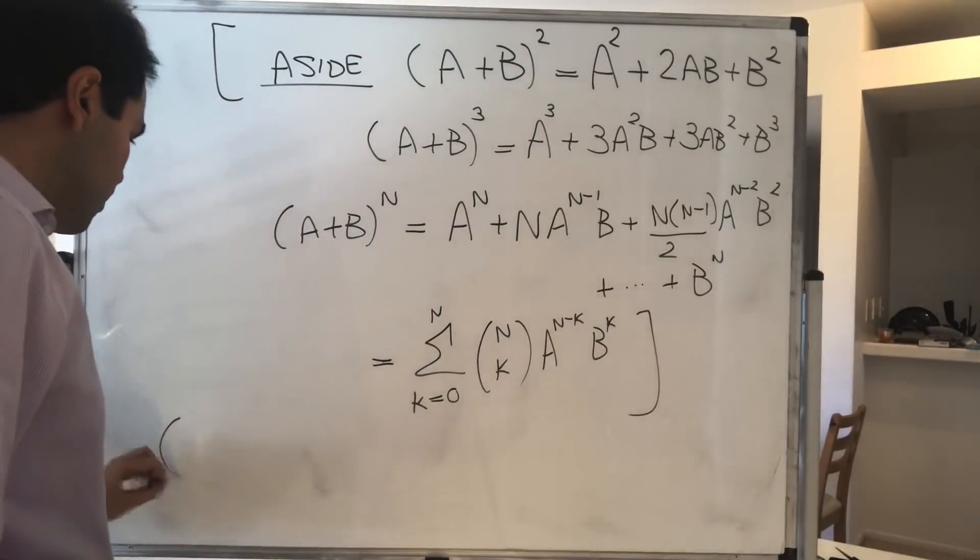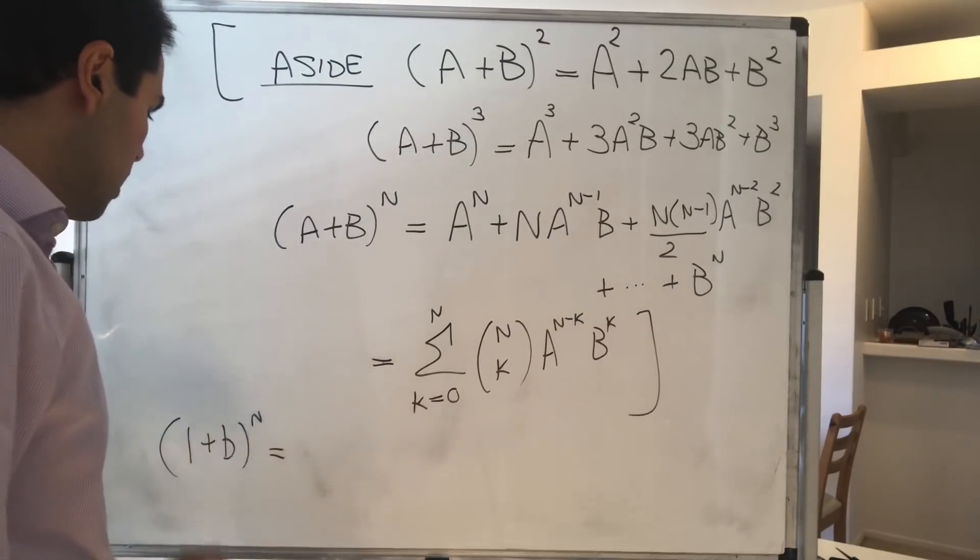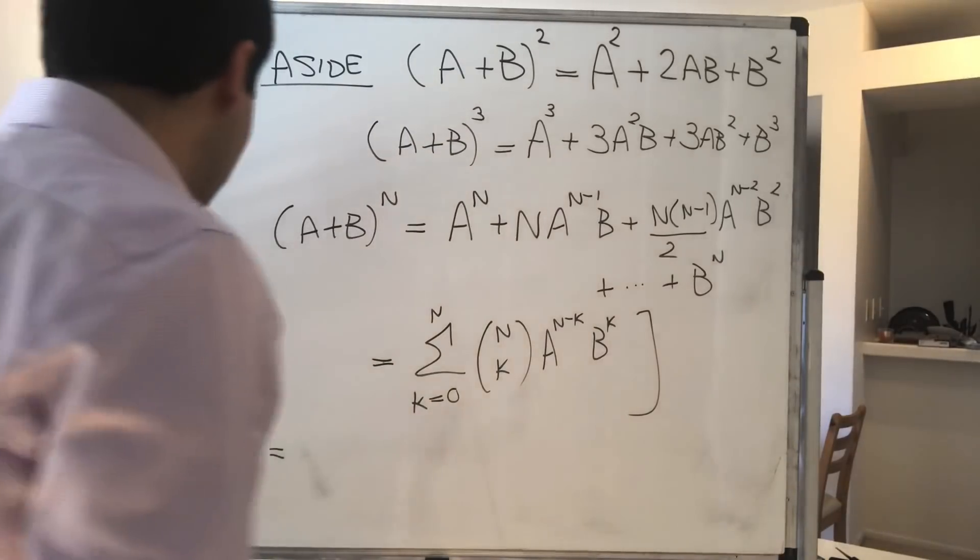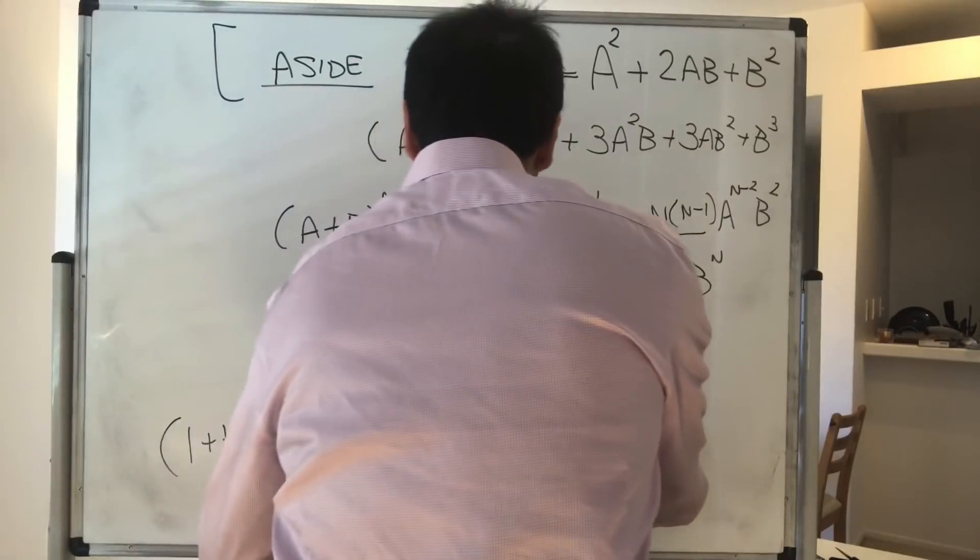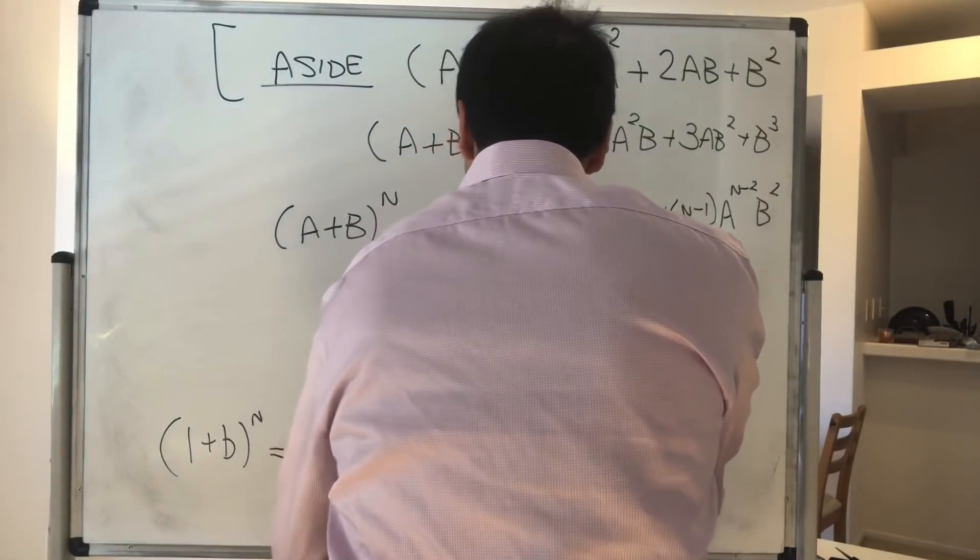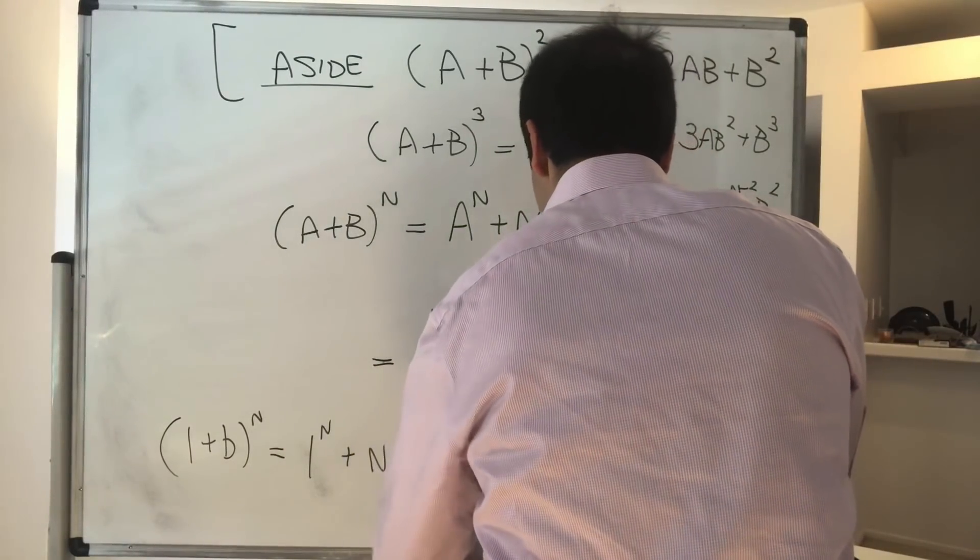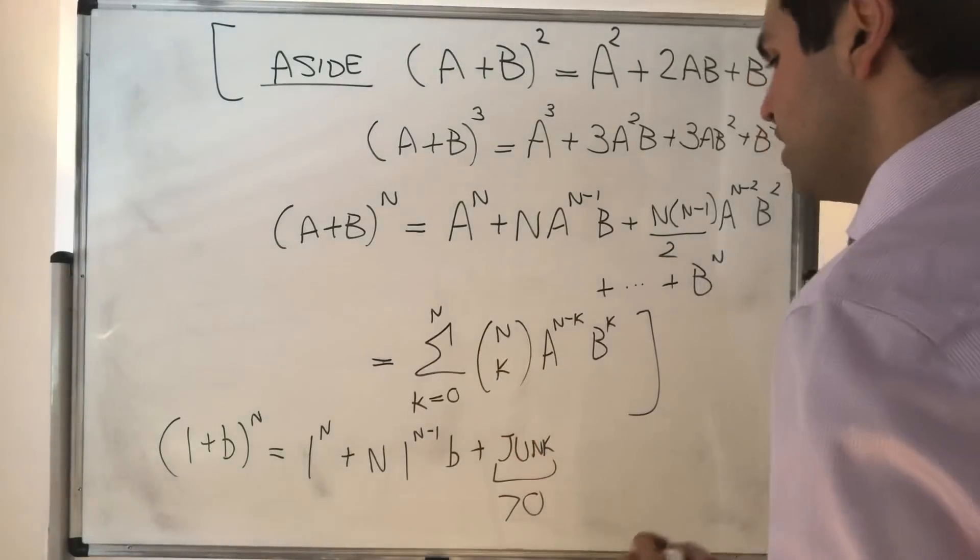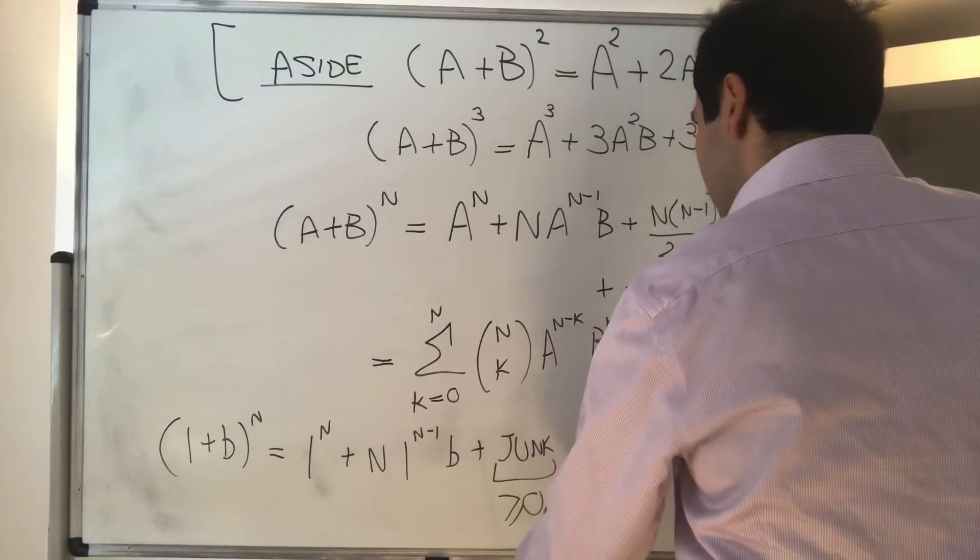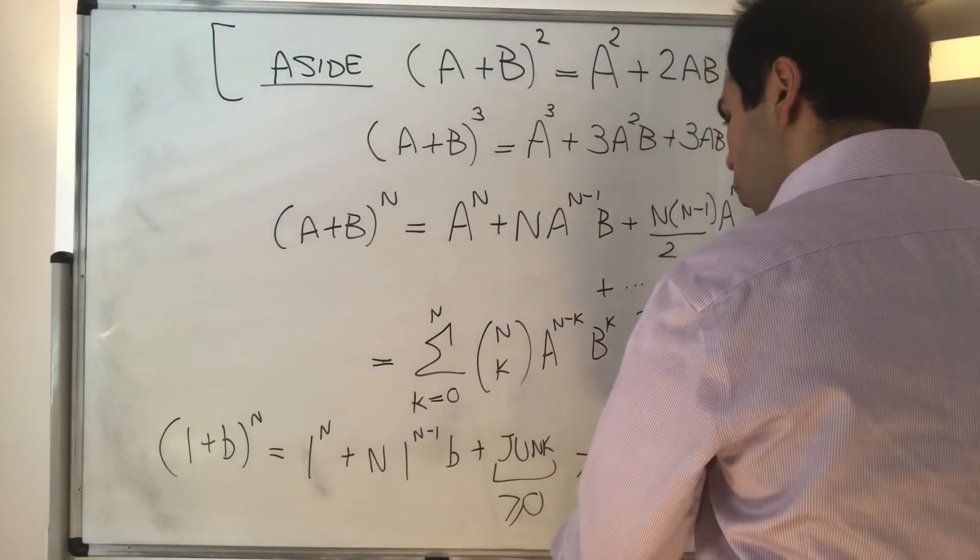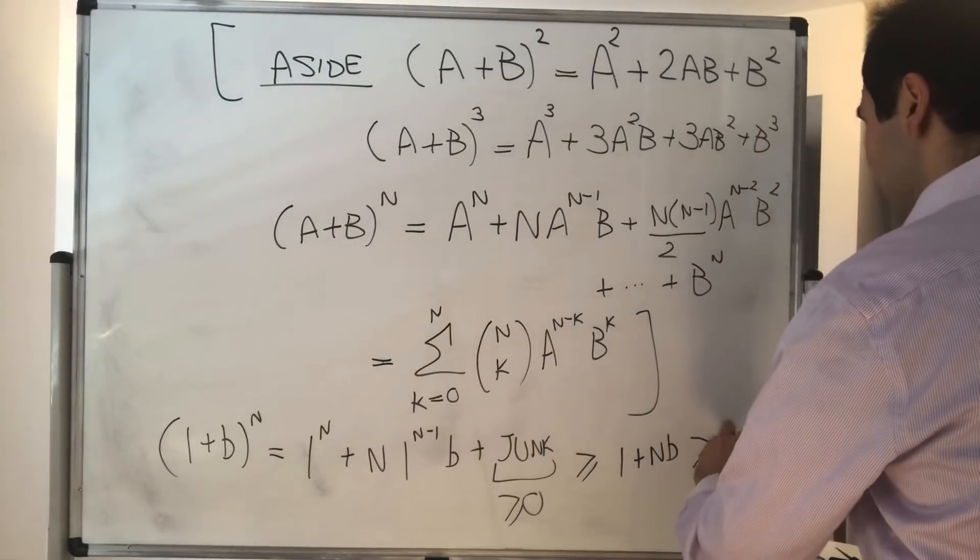Now, why is this useful? Because remember, we had our thing, 1 plus b to the n. Well, if you expand this out with the binomial theorem, this becomes 1 to the n plus n times 1 to the n minus 1 times b, plus some positive junk. And for today, we don't really care about the other terms, and so this becomes greater or equal to 1 plus nb, and in particular, that's strictly bigger than nb.